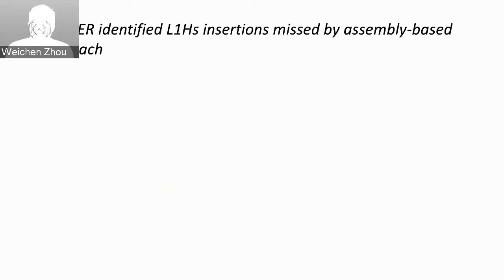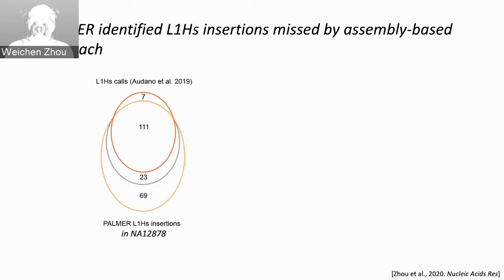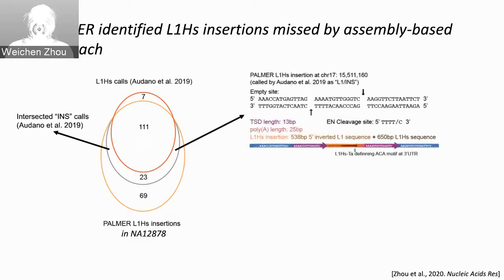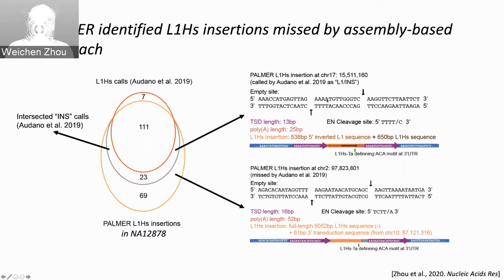Our manual inspection showed that those are only VNTR polymorphisms nearby the reference SVA regions that were mis-annotated as SVA polymorphisms by the assembly-based method. We also dug into details comparing our L1HS calls and the assembly-based approach in NA12878. There is some intersection between our Palmer calls and the assembly-based calls, though they sometimes cannot annotate insertions as L1HS specifically. We can clearly see all the structure of the L1HS insertions demonstrated in the right panel.